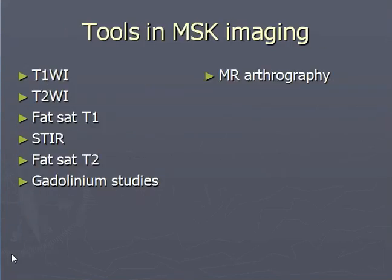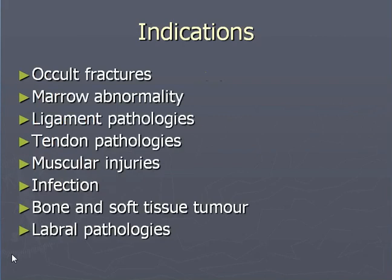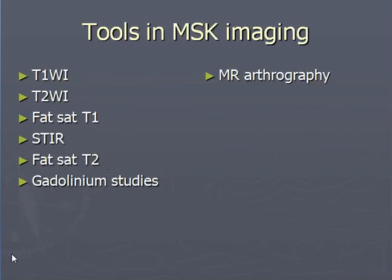These are the various tools used in musculoskeletal imaging: T1-weighted images, T2-weighted imaging, fat saturation T1, STIR imaging, fat saturation T2, post-gadolinium studies, and MR arthrography.